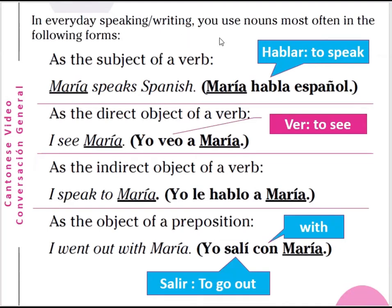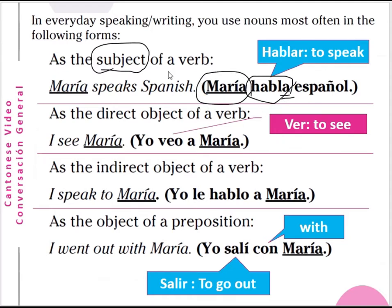In everyday speaking or writing we use nouns most often as the subject of a sentence. For example, María speaks Spanish — María habla español. María is the noun and subject of the sentence. As the direct object: 'I see María' — yo veo a María. Note that in Spanish you add an 'a' before a person who is the direct object. María is the direct object here.